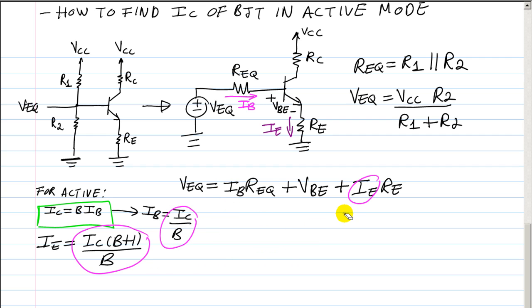Let me go ahead and plug that in. IB like I said is equal to IC over beta times REQ.